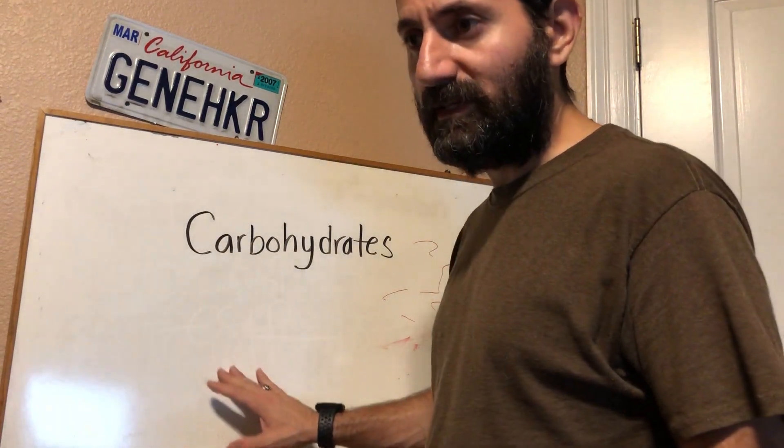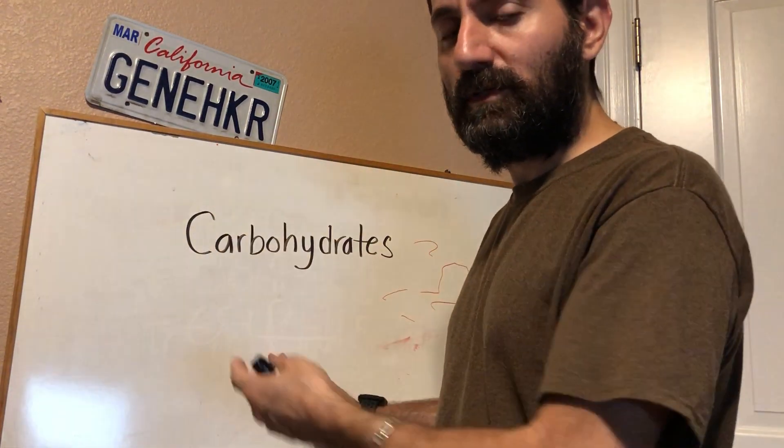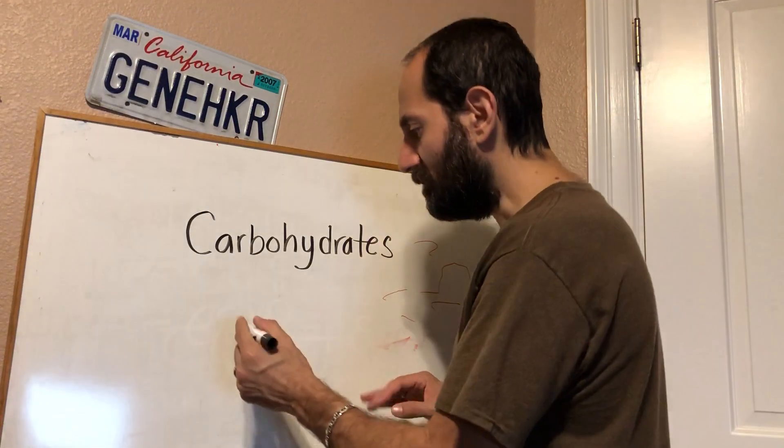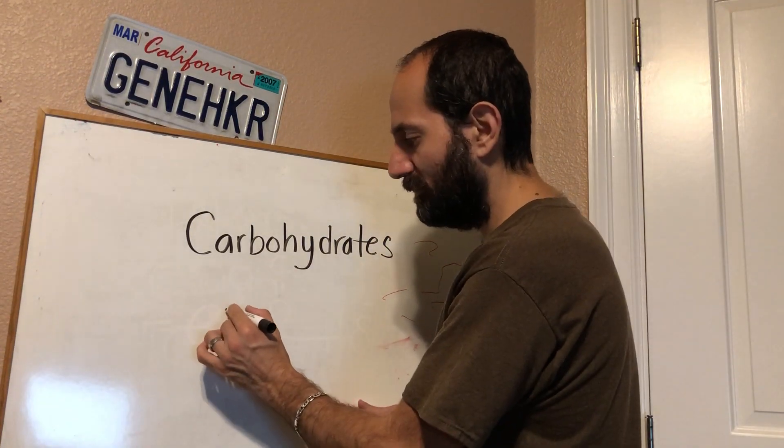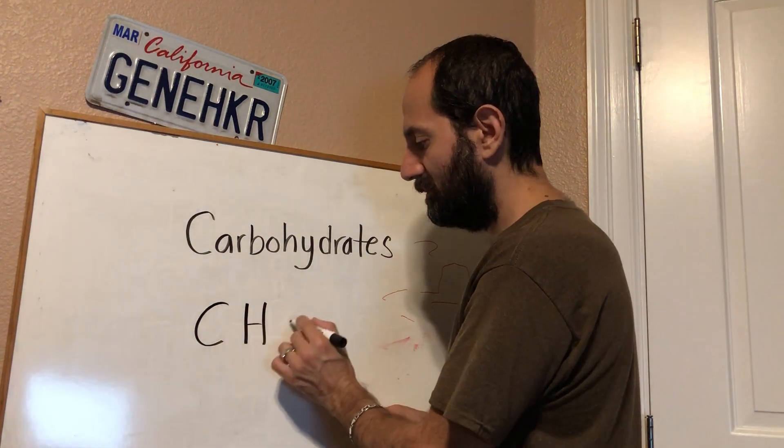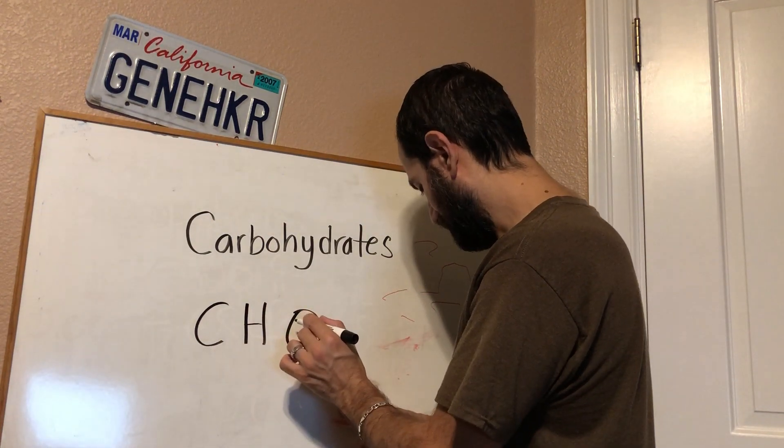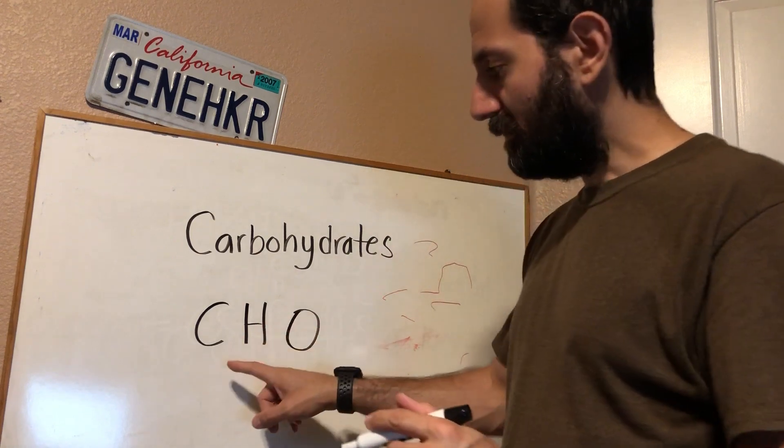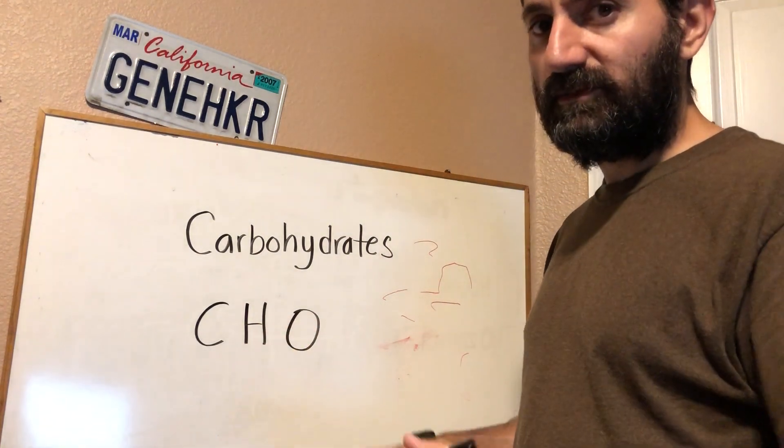So what does the monosaccharide look like? The building block of sugar, what does that look like? First of all, sugars are composed of carbons, hydrogens, and oxygens. You've got carbons, hydrogens, and oxygens. That's the formula for sugar.